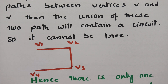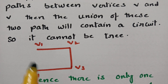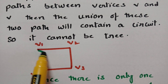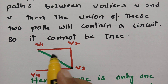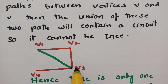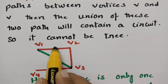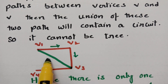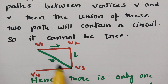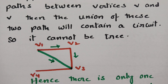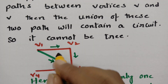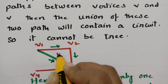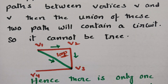If I connect like this and take another path, then from v1 to v2 this is one route and this is the second route. If I make another path then this is going to become a loop. If it is a loop, it can't be a tree.